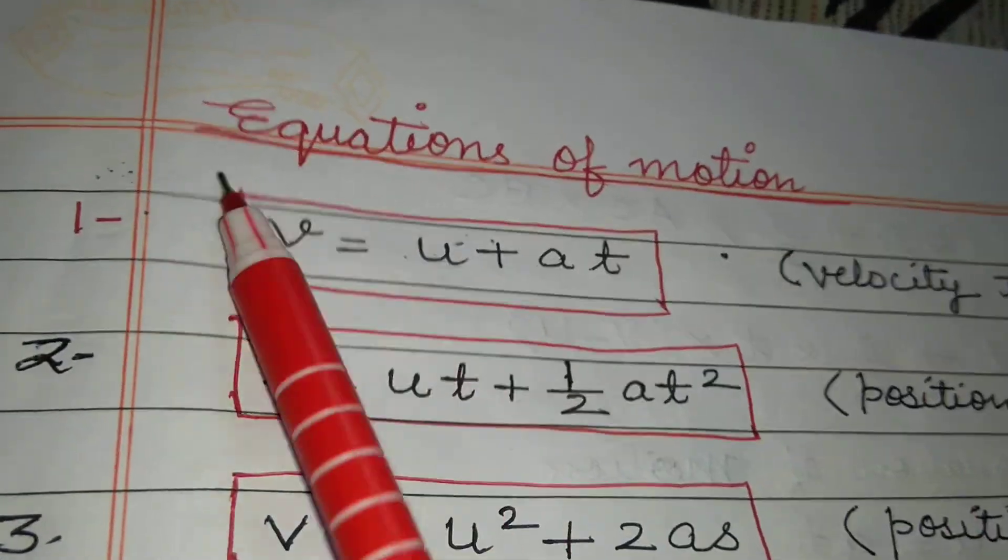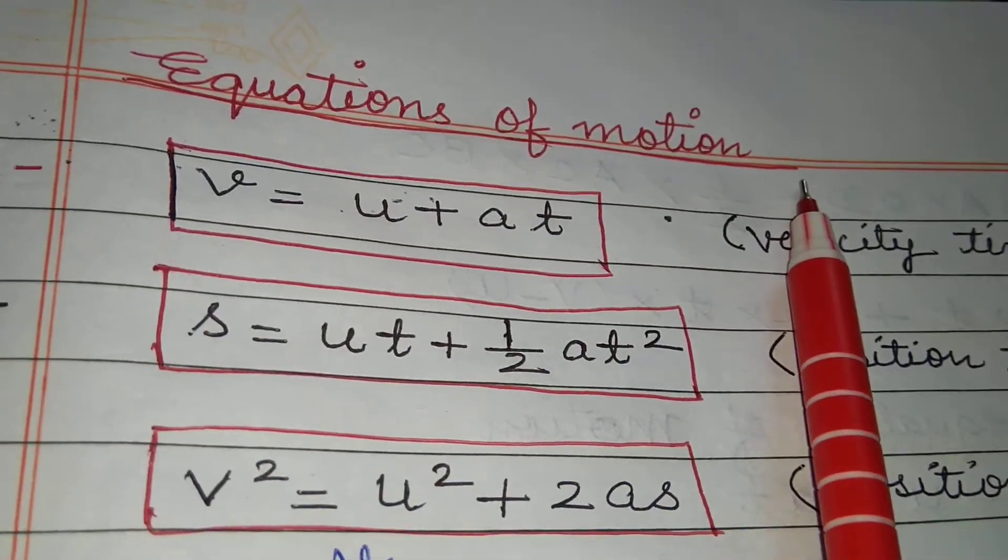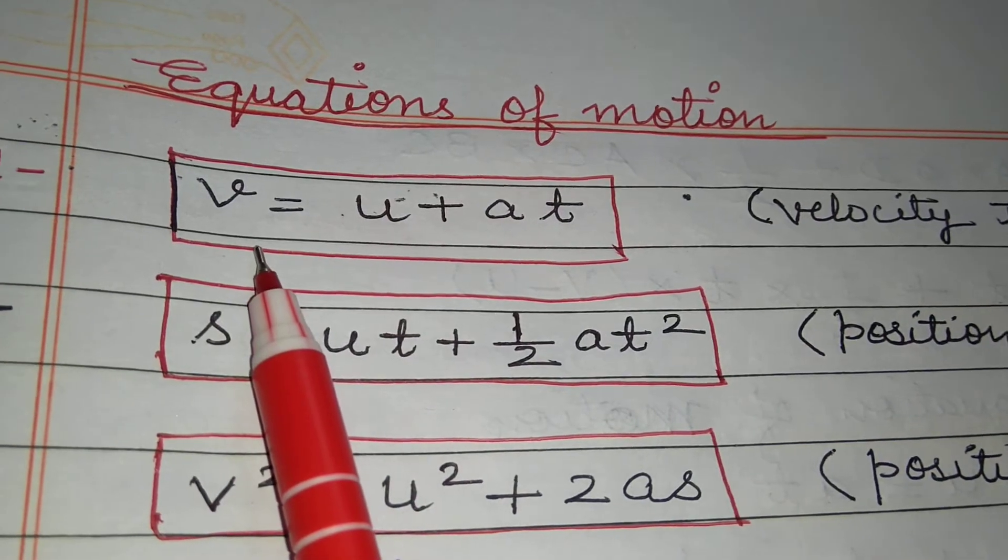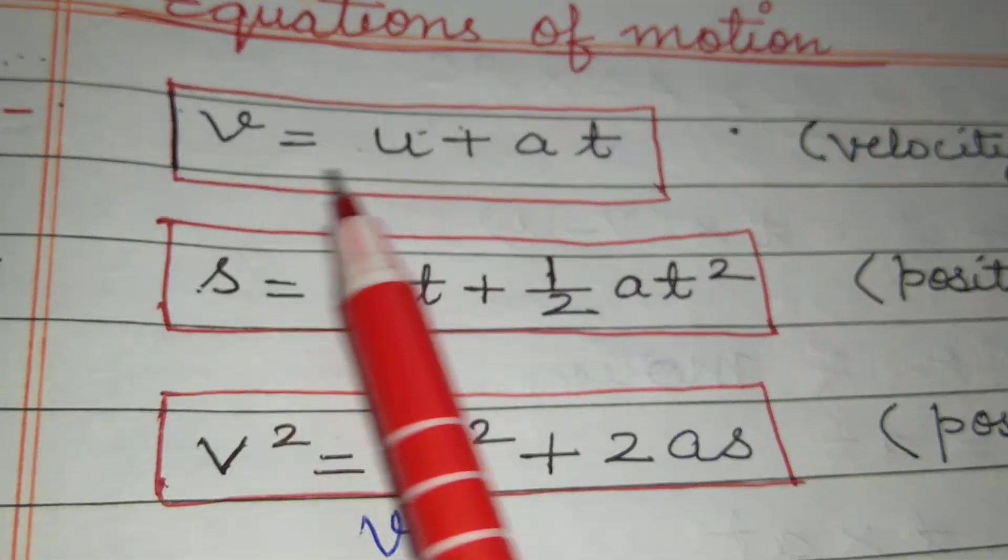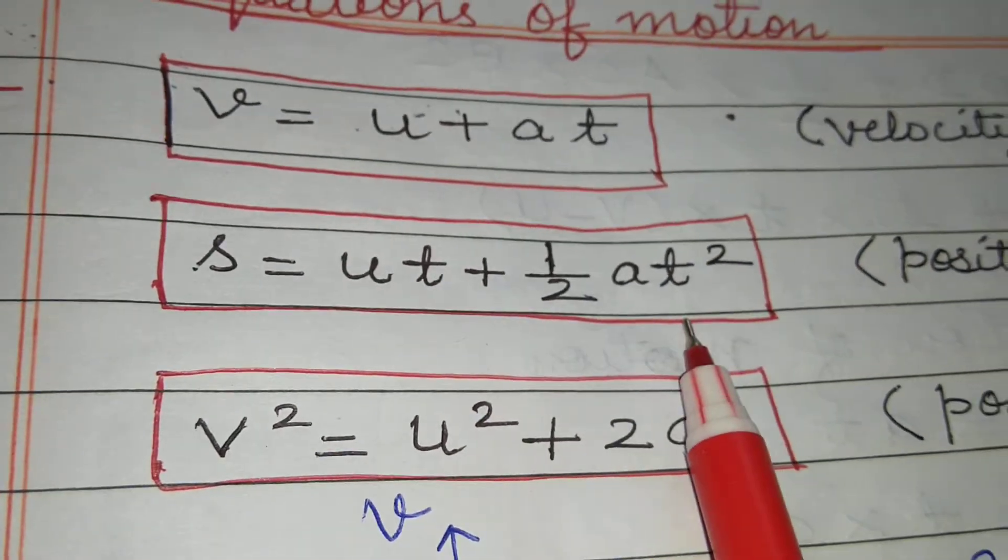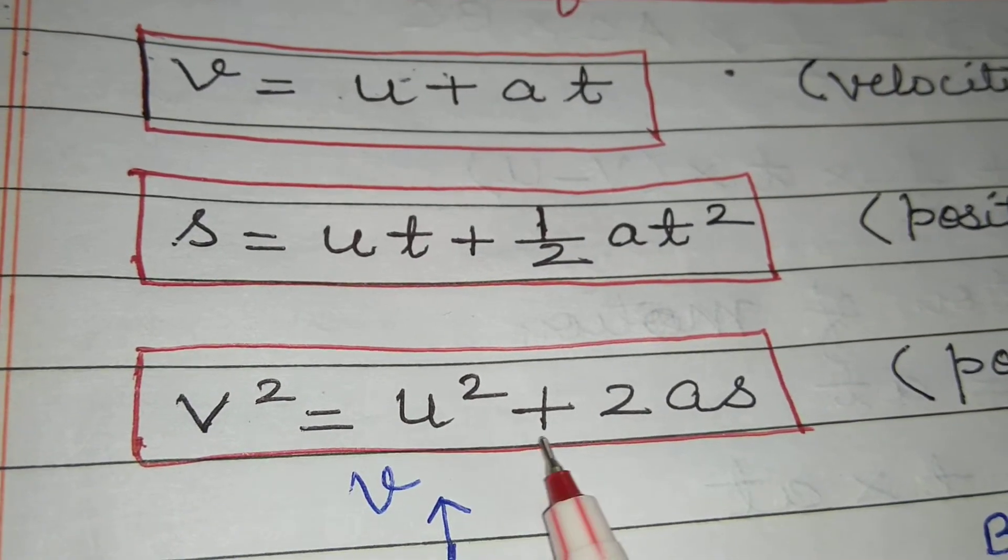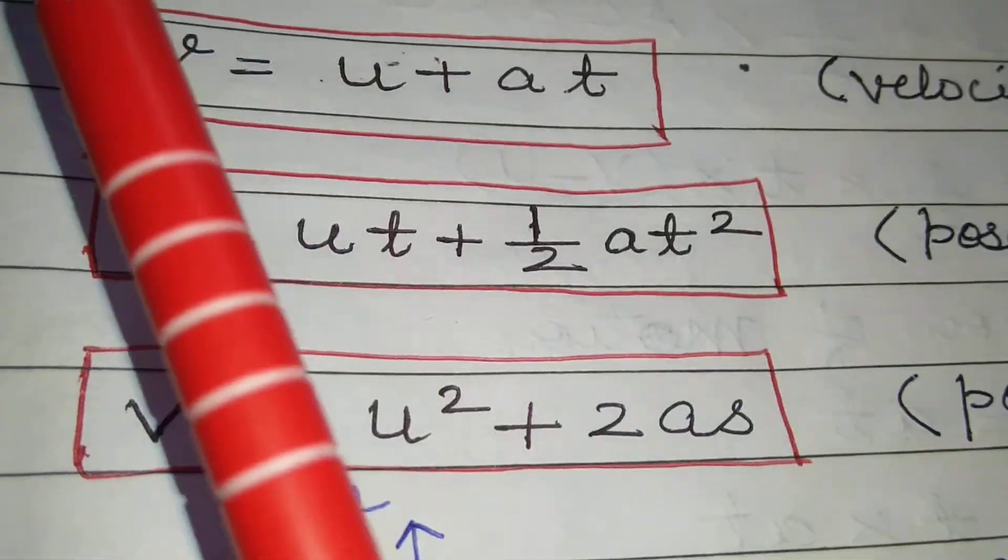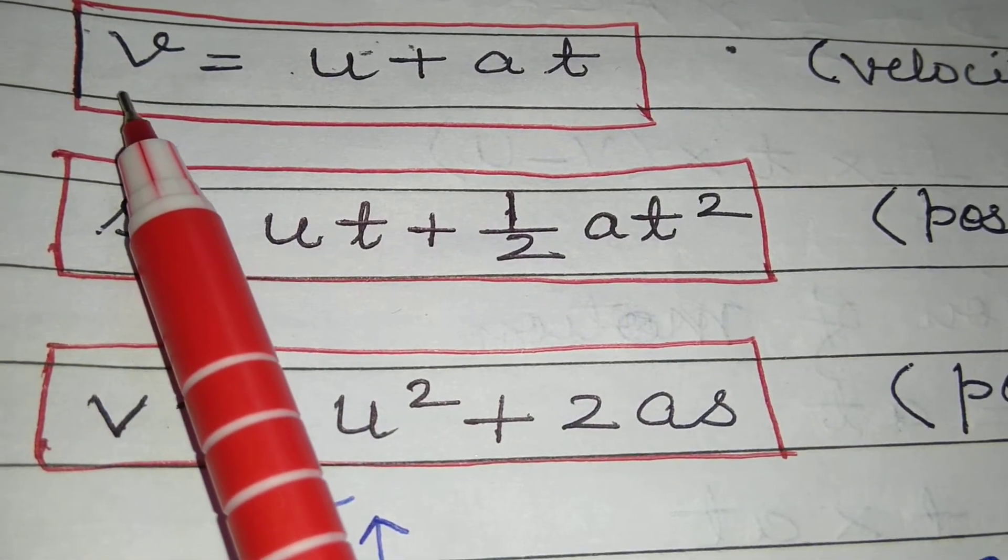The topic that we are going to discuss is equations of motion. Now we have three equations of motion. First is v equals u plus at. Second is s equals ut plus half at squared. And third is v squared equals u squared plus 2as.